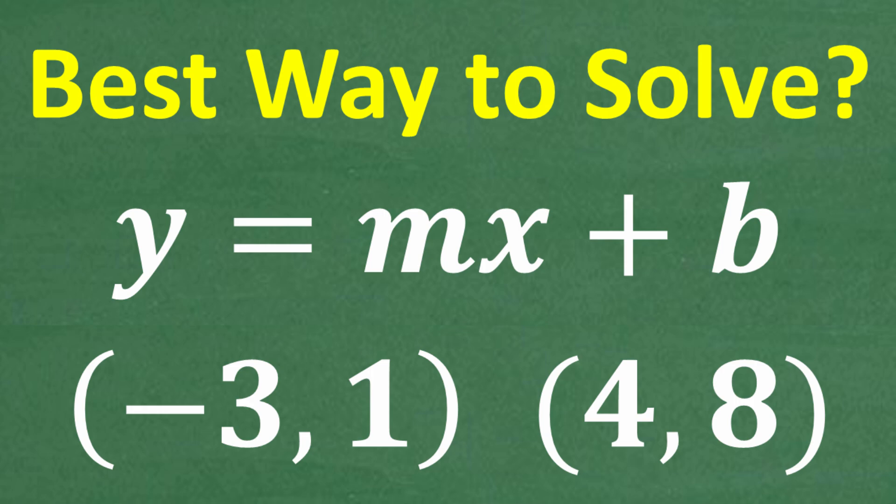So we have a line that passes through these two points. The objective is to find the equation of this line, and we want to write it in y equals mx plus b form. Of course, this is slope-intercept form. If you're taking any sort of algebra course, this should be a pretty easy problem for you. If you think you can figure this out, go ahead and put your answer into the comment section. And then, of course, I'm going to walk through the solution here step by step.